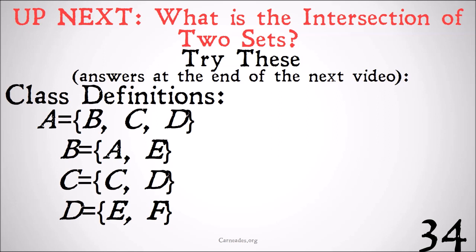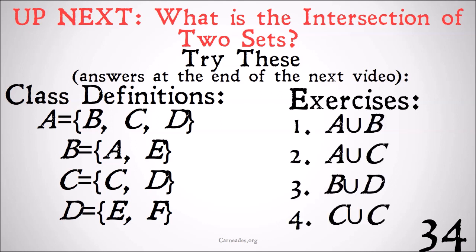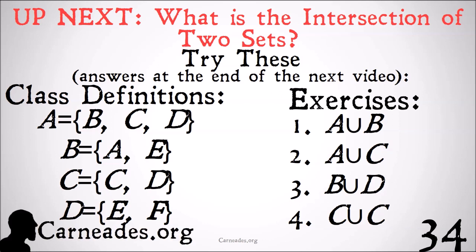Here are some class definitions for the practice problems. We're going to call A the set {B, C, D}, B the set {A, E}, C the set {C, D}, and D the set {E, F}. Assuming that all of these are different from each other and none of them equal the null set, what is the union of A and B, the union of A and C, the union of B and D, and the union of C and itself? Give those a try and stay tuned at the end of the next video for answers. Watch this video and more at currentaides.org and stay skeptical, everybody.